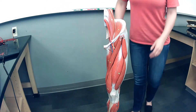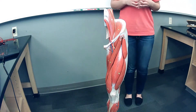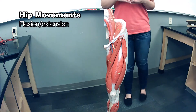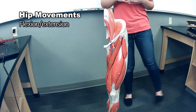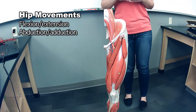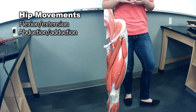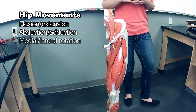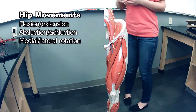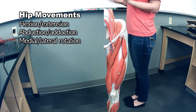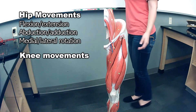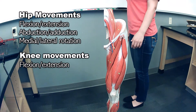Just a reminder, your hip can do flexion, extension, abduction, lateral rotation, and medial rotation. Your knee, on the other hand, because it's a hinge joint, can only do flexion and extension.